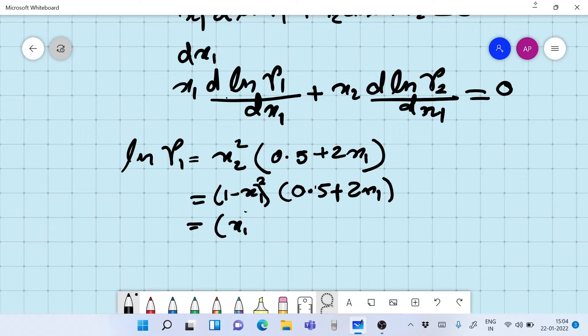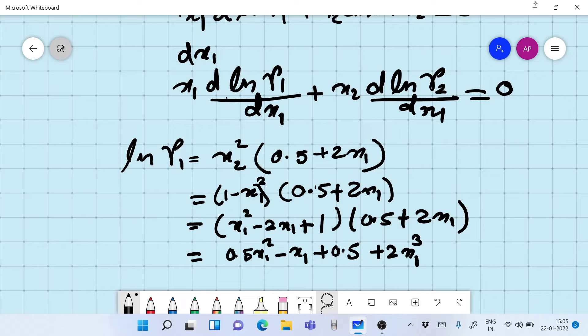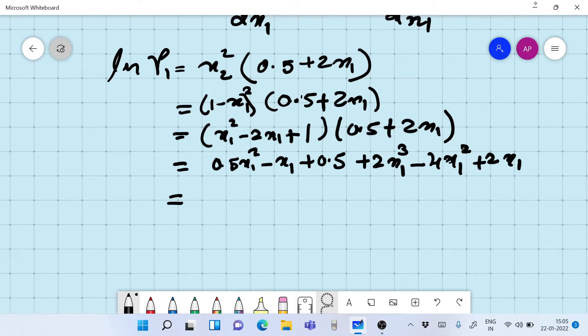We write it down as 1 minus x1 whole square equals 0.5 plus 2x1. That also can be written as x1 square minus 2x1 plus 1 into 0.5 plus 2x1, right?